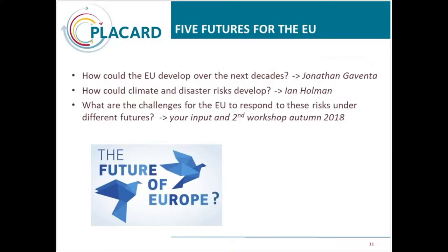The three EU policy areas are: the adaptation strategy of the EU currently being evaluated and might be revised; the EU civil protection mechanism in the area of DRR; and the new research program FP9 currently being designed after Horizon 2020. Today we'll listen to Jonathan Gaventa about the five futures for Europe and what they mean for climate, Ian Holman about risks and potential impacts, and then have an interactive session about challenges related to climate risks and the uncertain future.